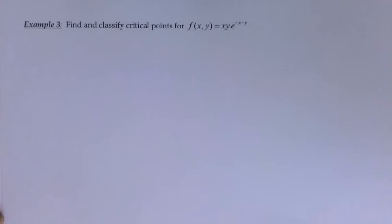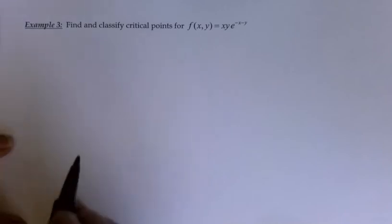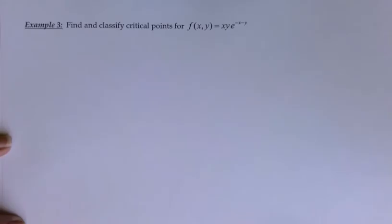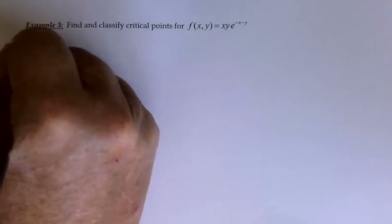This is section 12.8, part 2, and we're going to be looking at finding another set of critical values and then classifying them as maximum, minimum, or saddle points. We've got the function xy·e^(-x-y), and we'd like to start by locating our critical points.